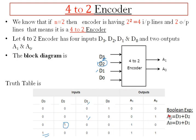Next, writing the Boolean expressions. Observing A1: A1 is 1 when D2 is 1, and A1 is 1 when D3 is 1, so A1 = D2 + D3. For A0: A0 is 1 for D1 and D3, so A0 = D1 + D3. This is the Boolean expression for the 4-to-2 encoder.